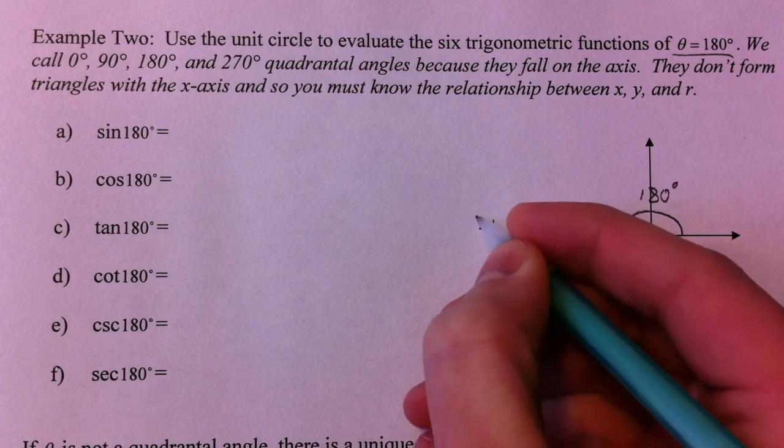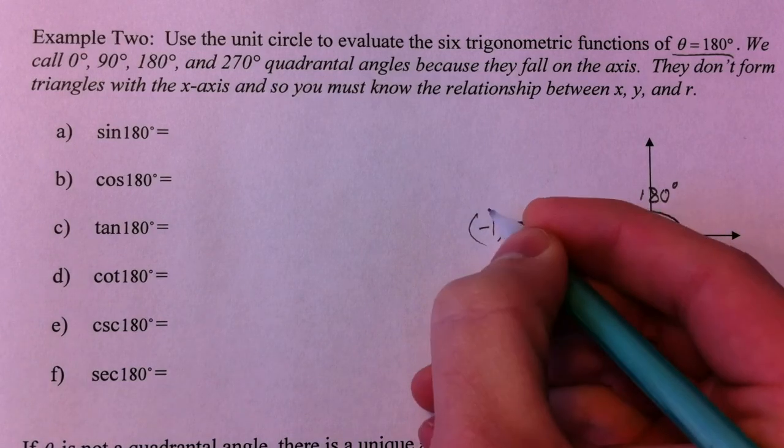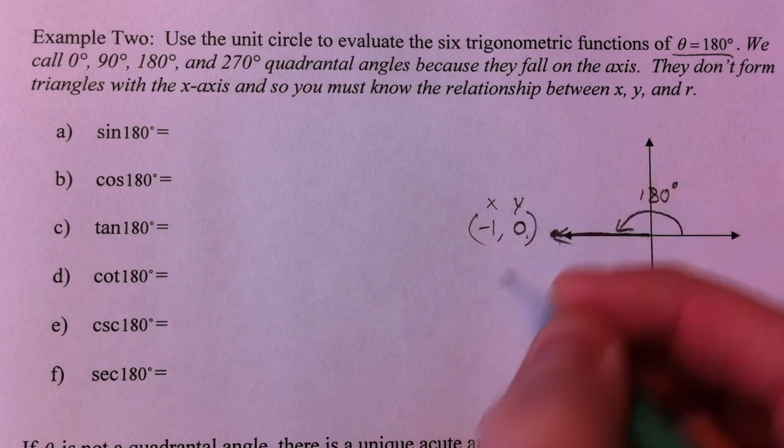you've gone to the left 1, and up and down 0. So your x-value is negative 1, your y-value is 0.